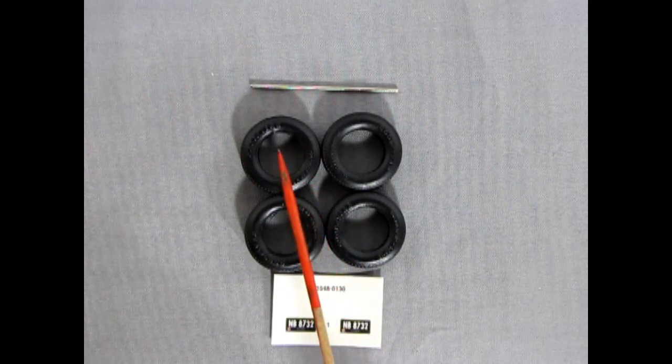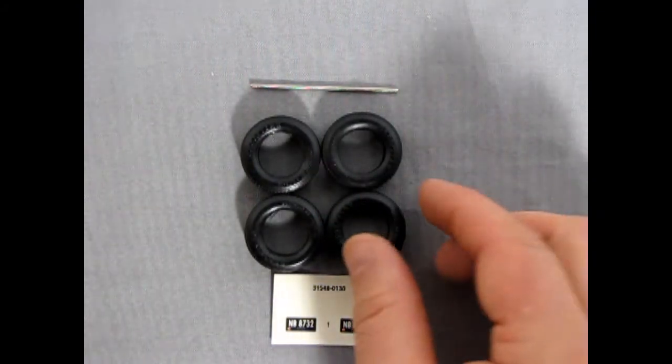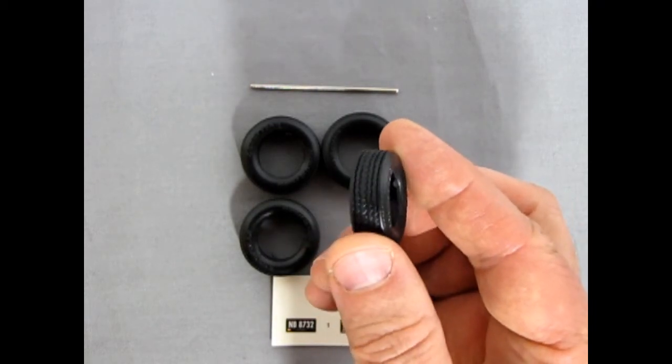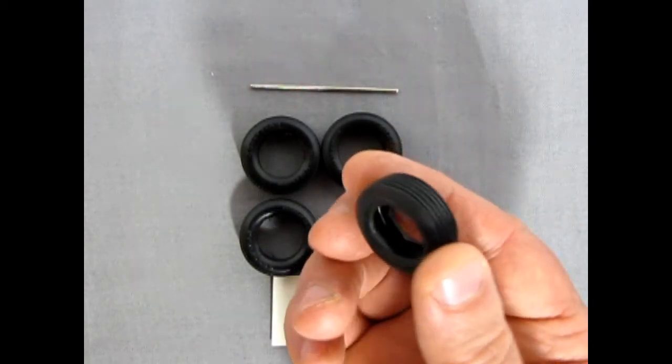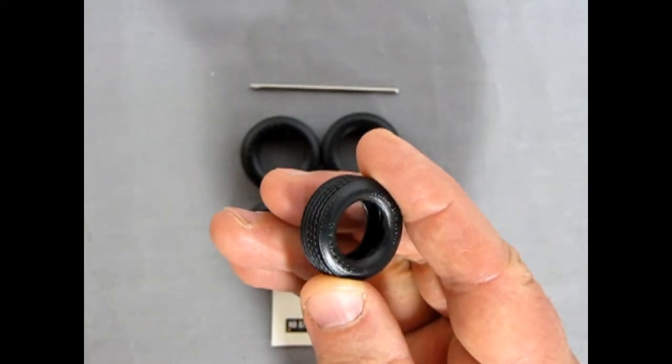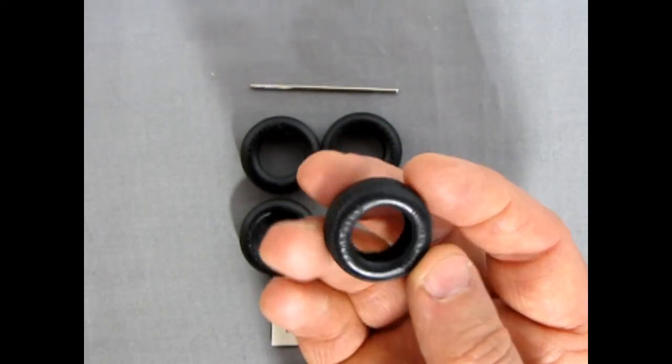The tires here are the really excellent Goodyear Polyglass GTs. These were bias belted tires back in the day just before the radials really took over. You can see the nice tread detail. These are excellent tires. Actually they're quite nice. Usually there's a spider web in here but AMT has removed it and they did a really good job of removing it perfectly.